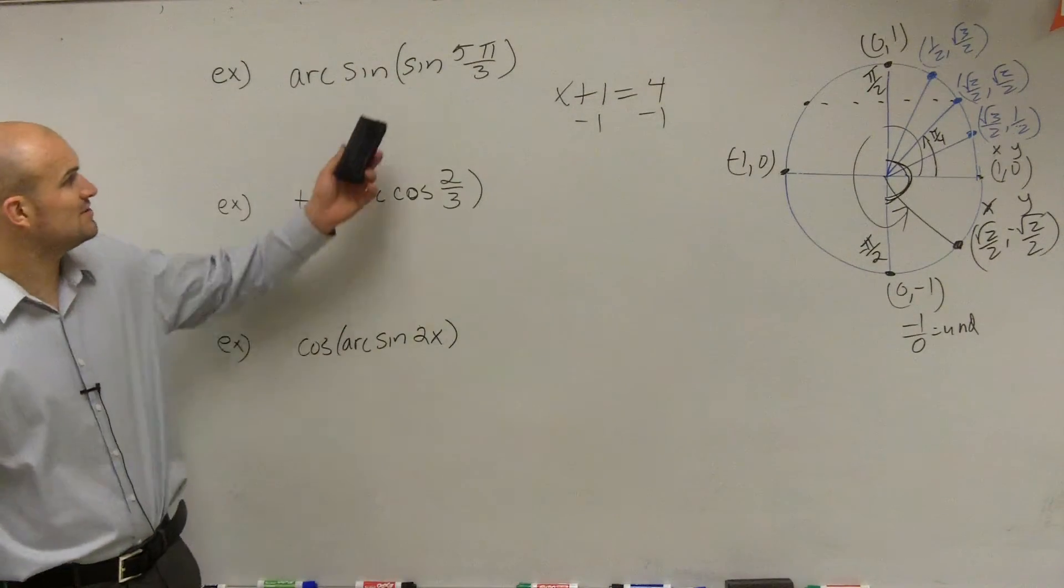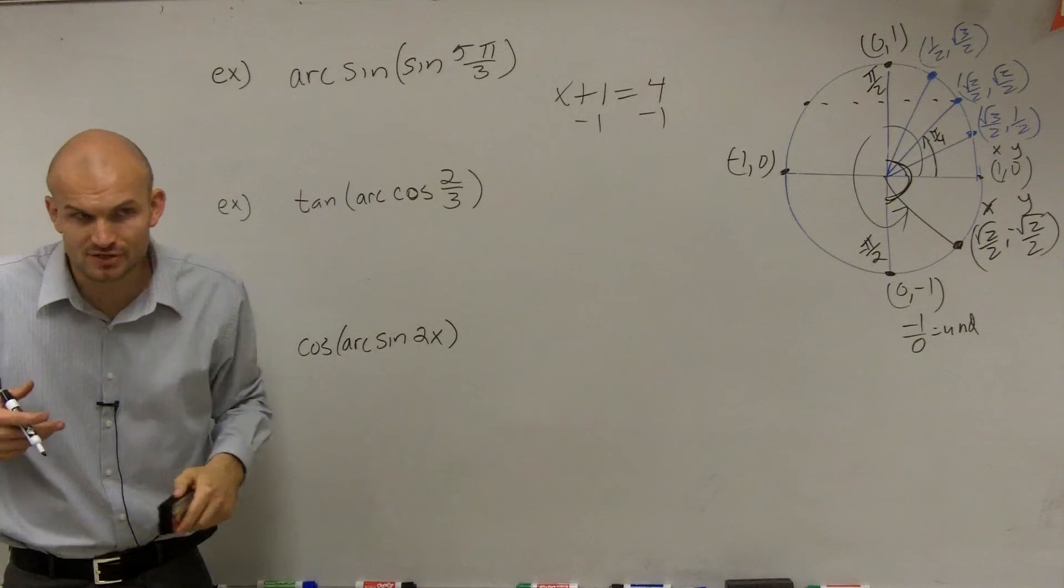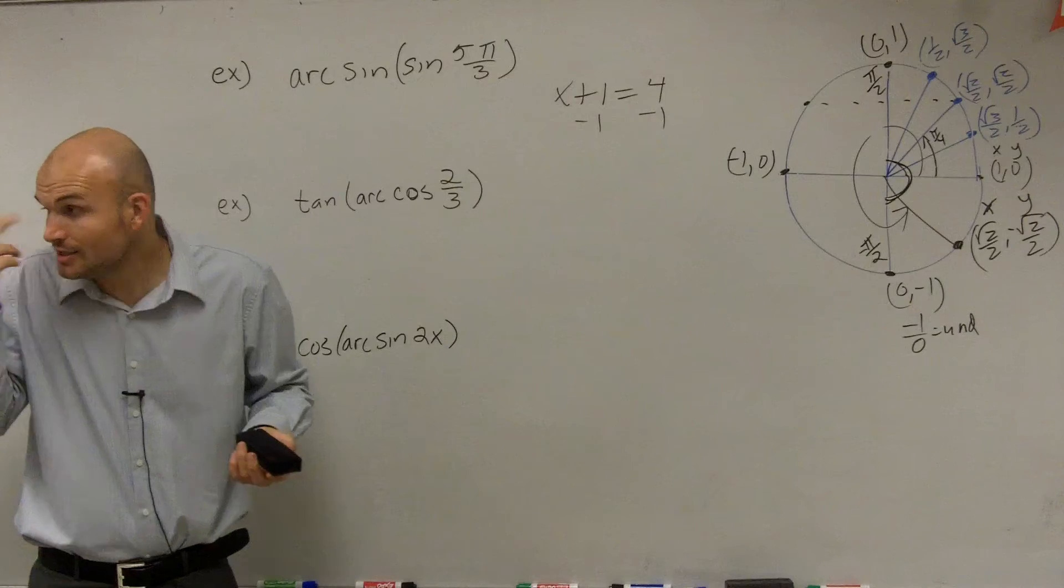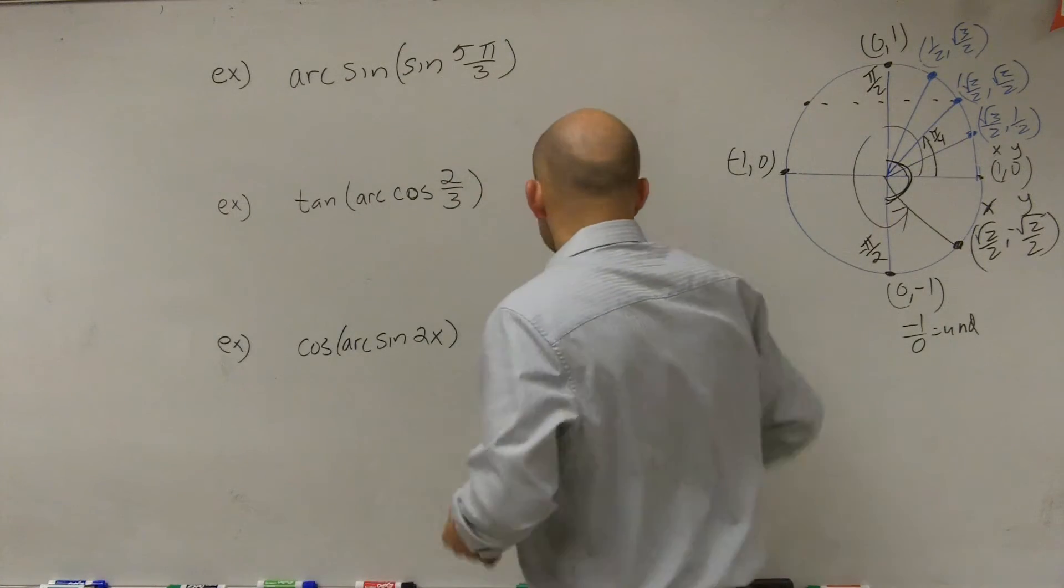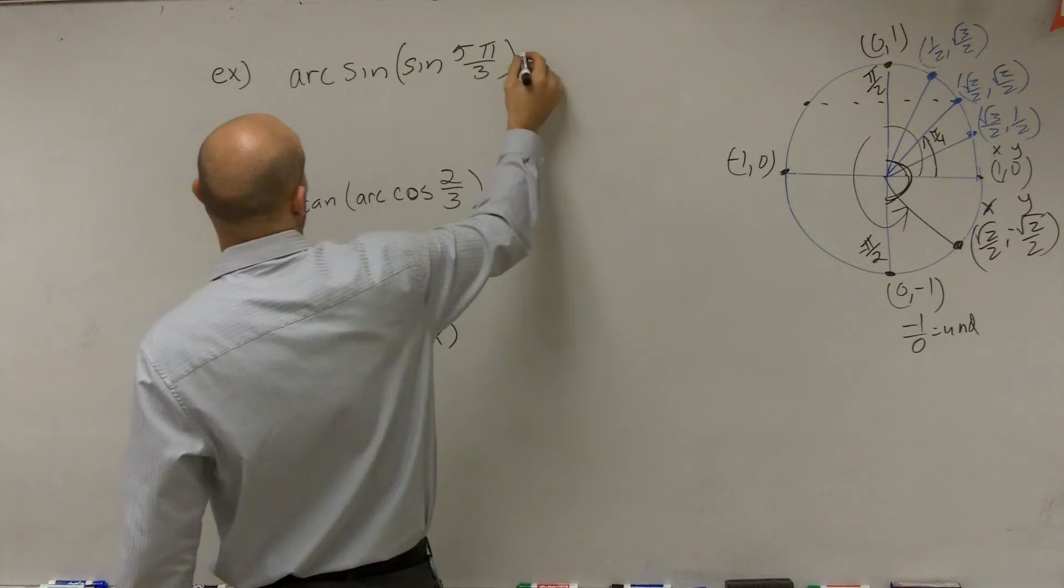So when you guys look at a problem and you see arcsine and then sine, what do you think arcsine and sine are doing to each other? They're undoing each other, right? So what you're going to get in this case is you're going to get equal to 5π over 3.